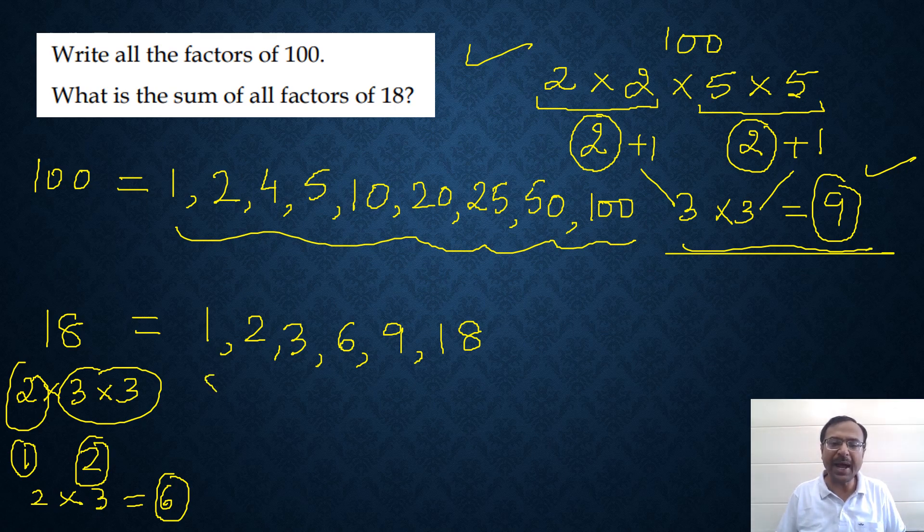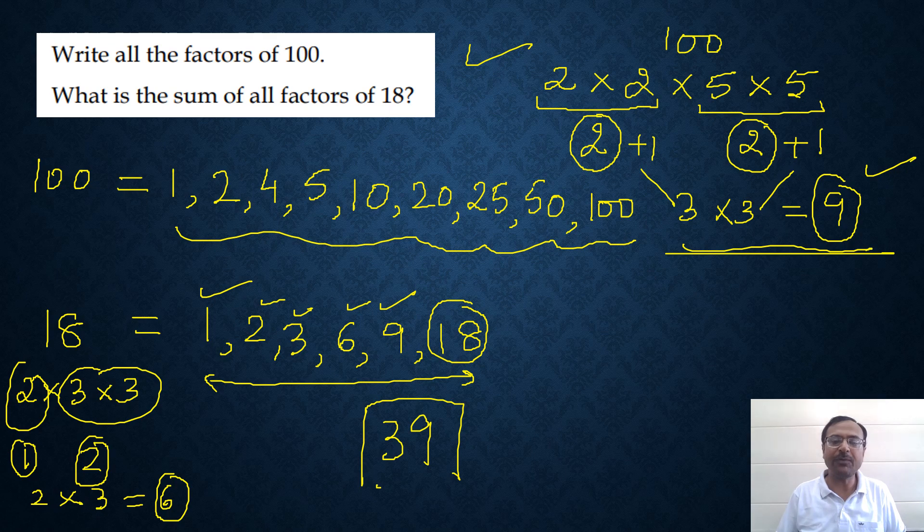Now he is asking us to add these factors. See 18, 9 plus 1 is 10, so that makes it 28. And 6 plus 3 is 9, plus 2 is 11. So 28 plus 11 gives you 39, which is the sum of all the factors of 18.